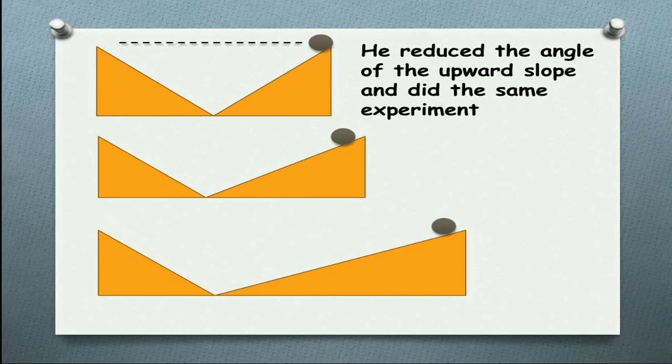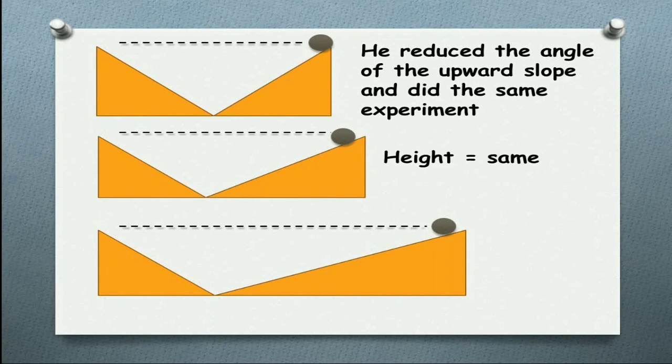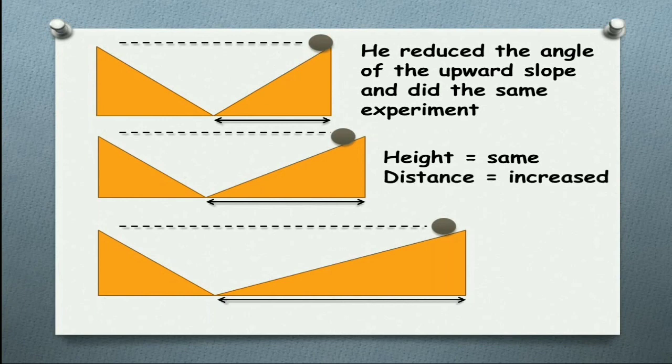If you observe the height, the ball finally reaches the height that is equal to where it starts. So height is same. Now measure the length of the upward inclined plane. It will get increased as the angle gets decreased. So the distance is increased. No matter what the distance is, it goes to the height where it starts.